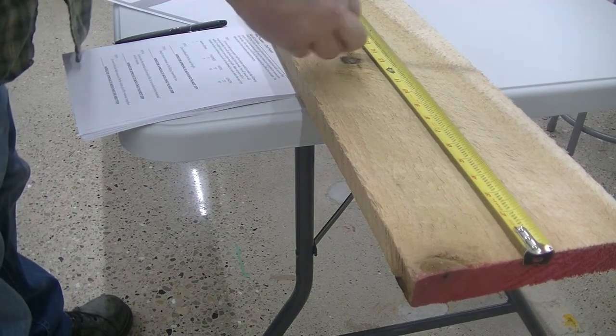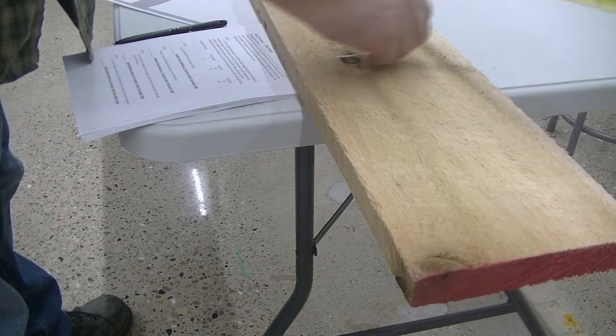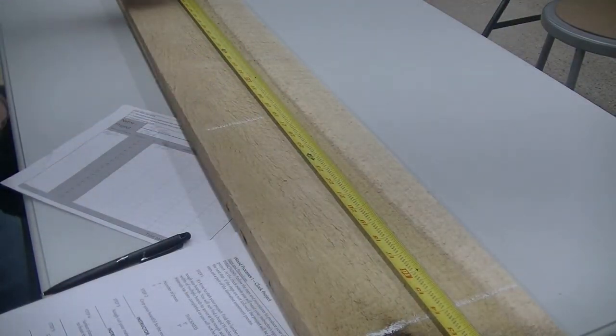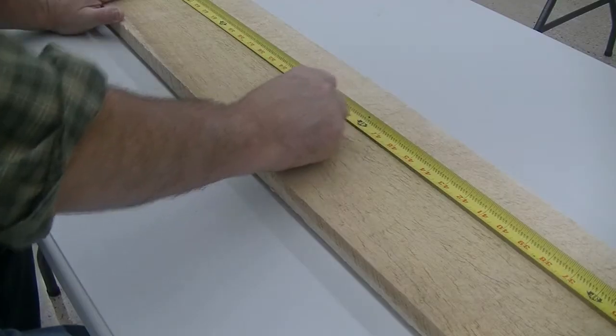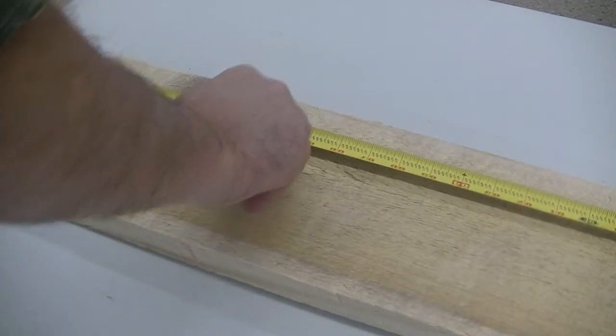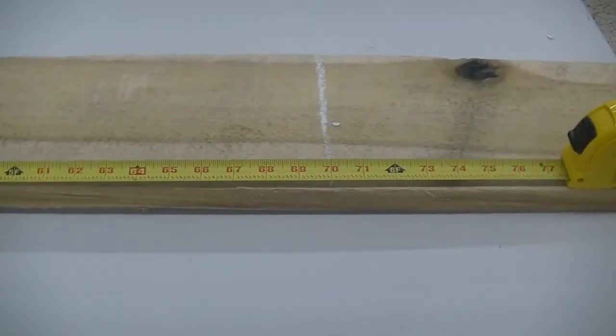Crop your boards to the rough length: 14 inches, 28 inches, 49 inches, and 70 inches.